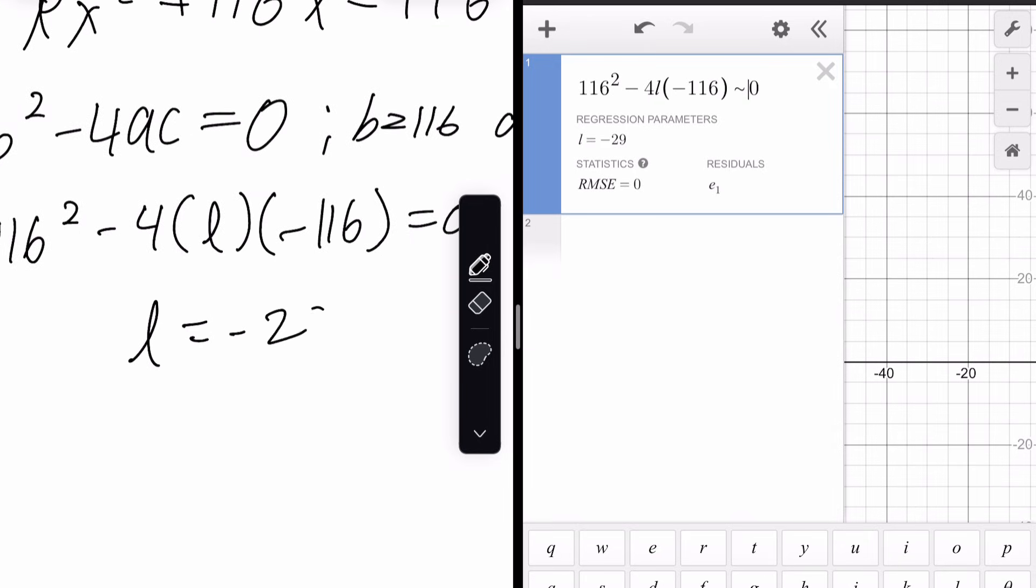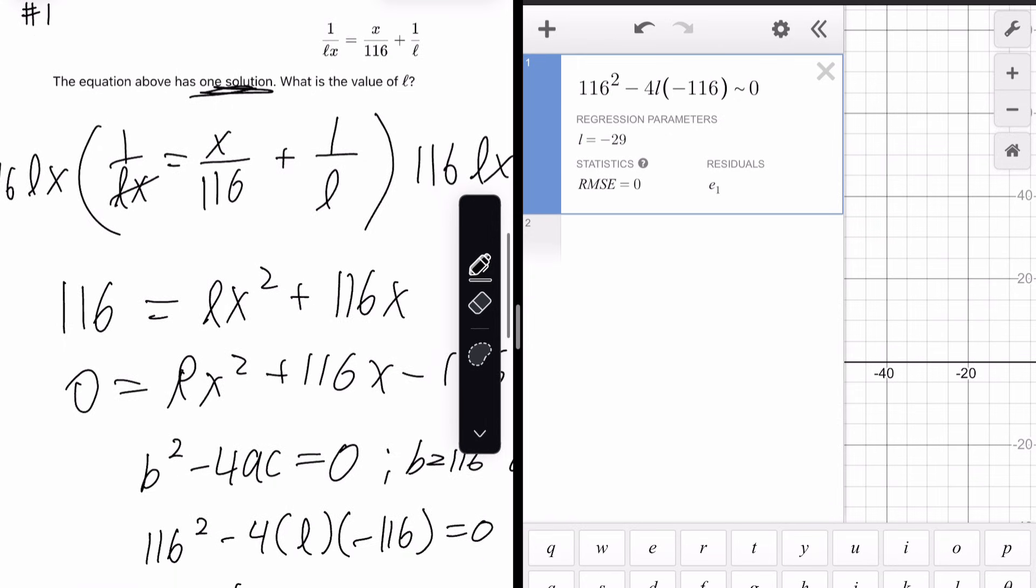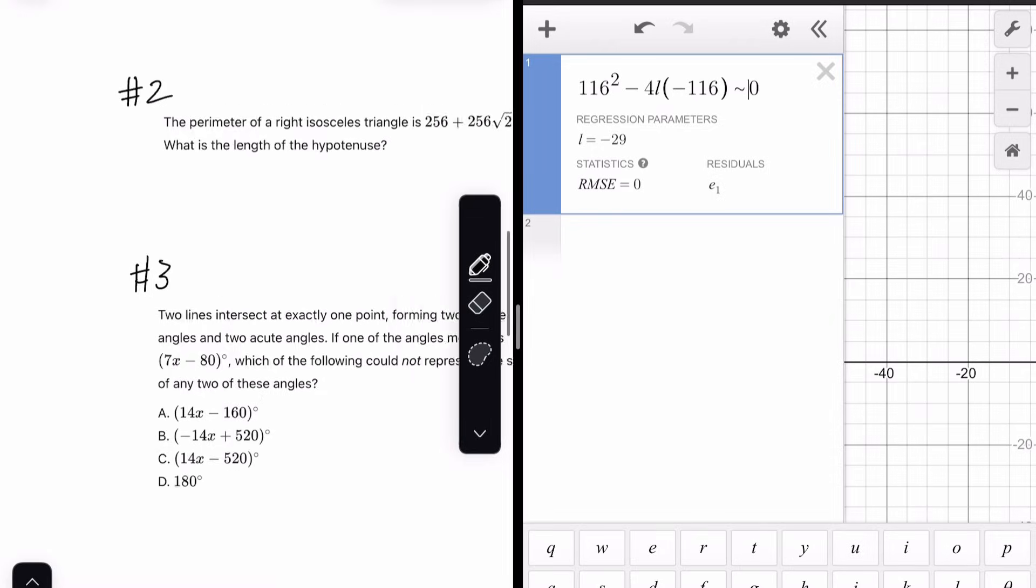Well, we get L equals negative 29. That's the value of L when the equation has one solution. Because this is really just a parabola in a different, in a weird, unique form. Let's move on to number two.